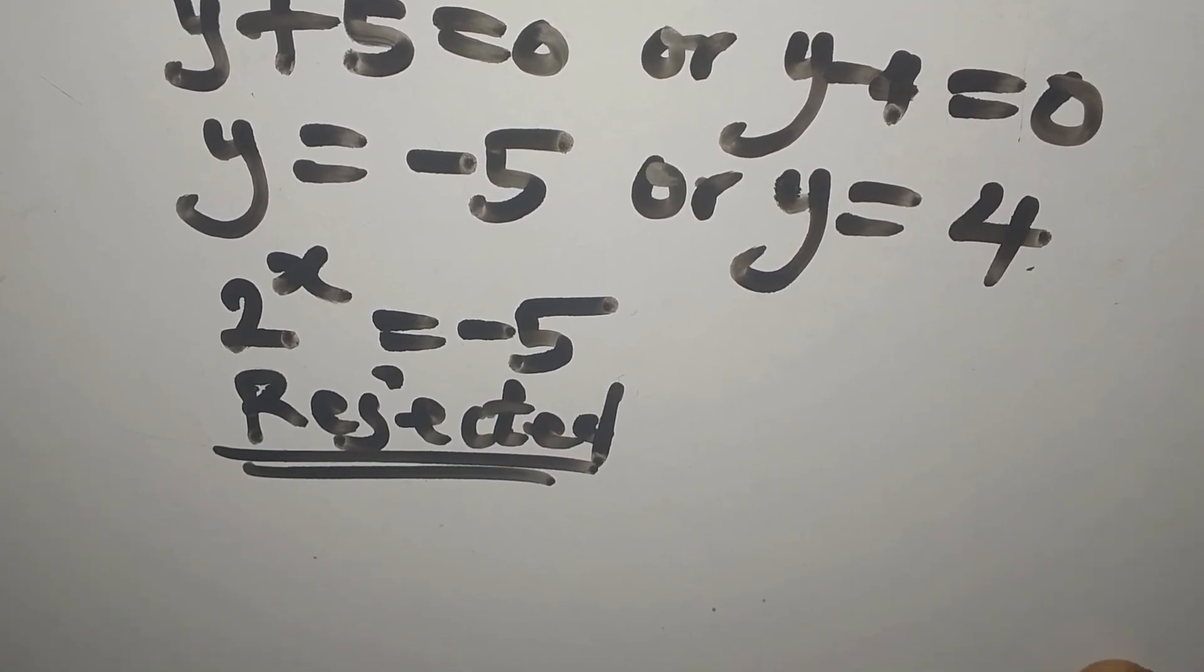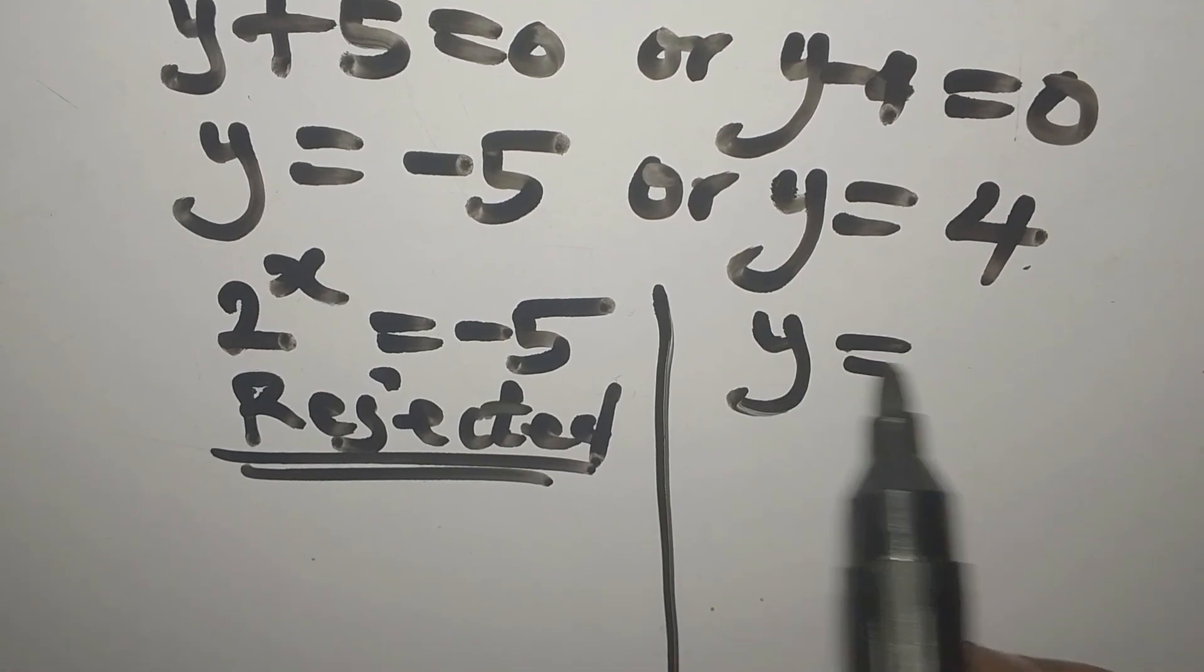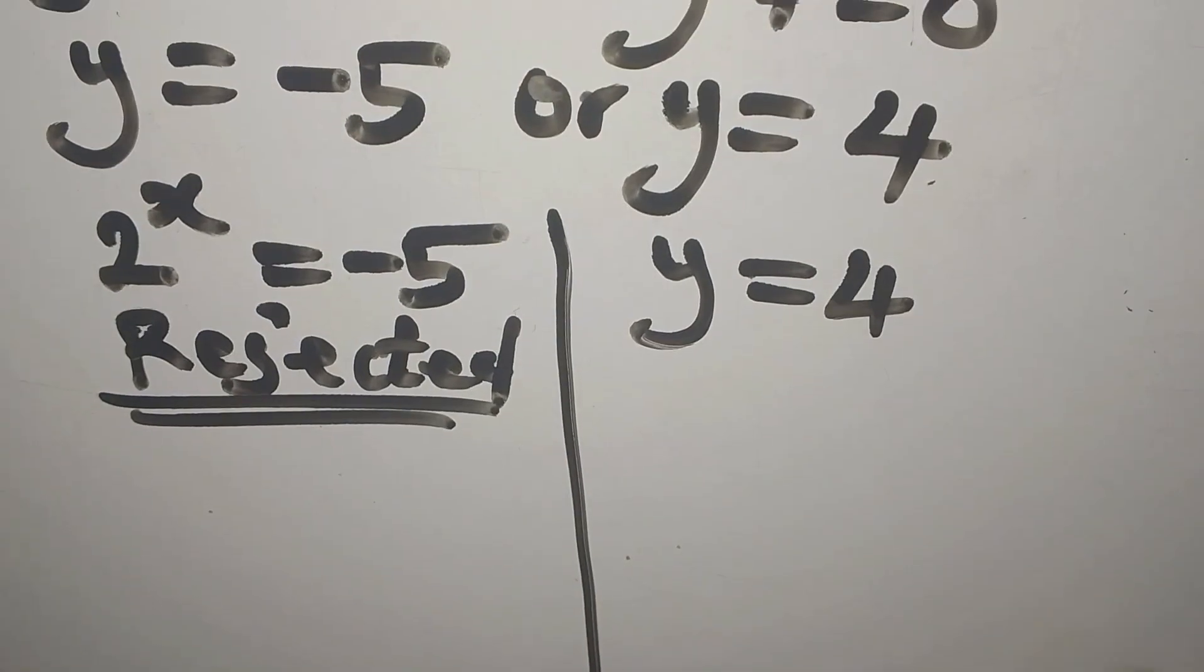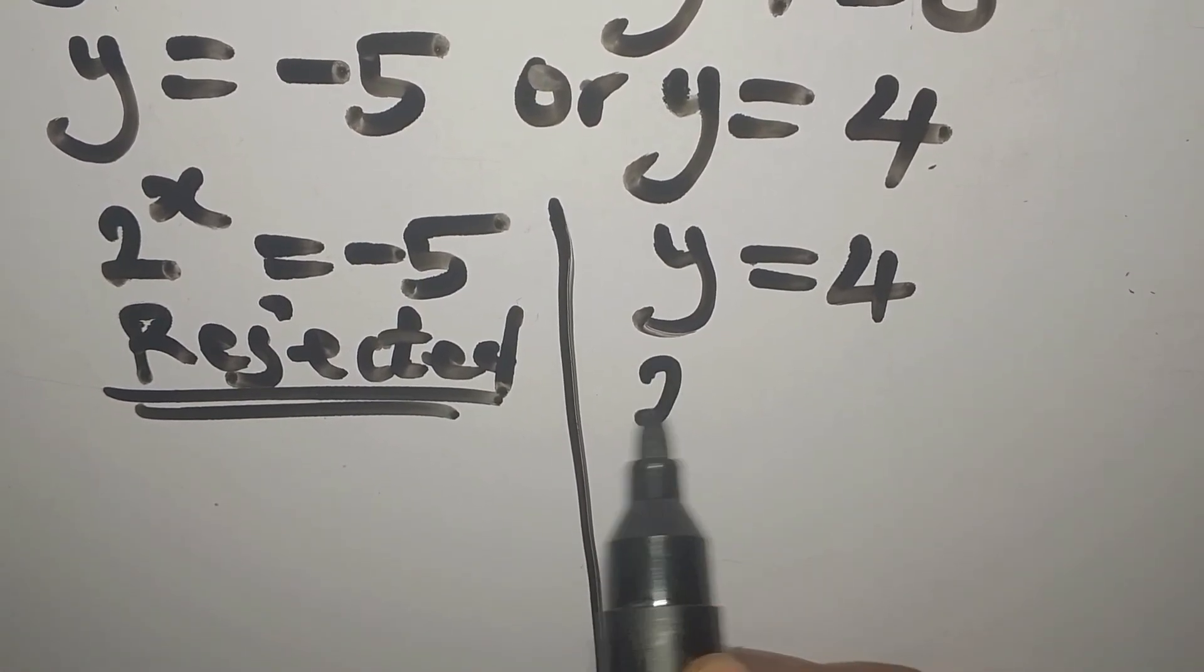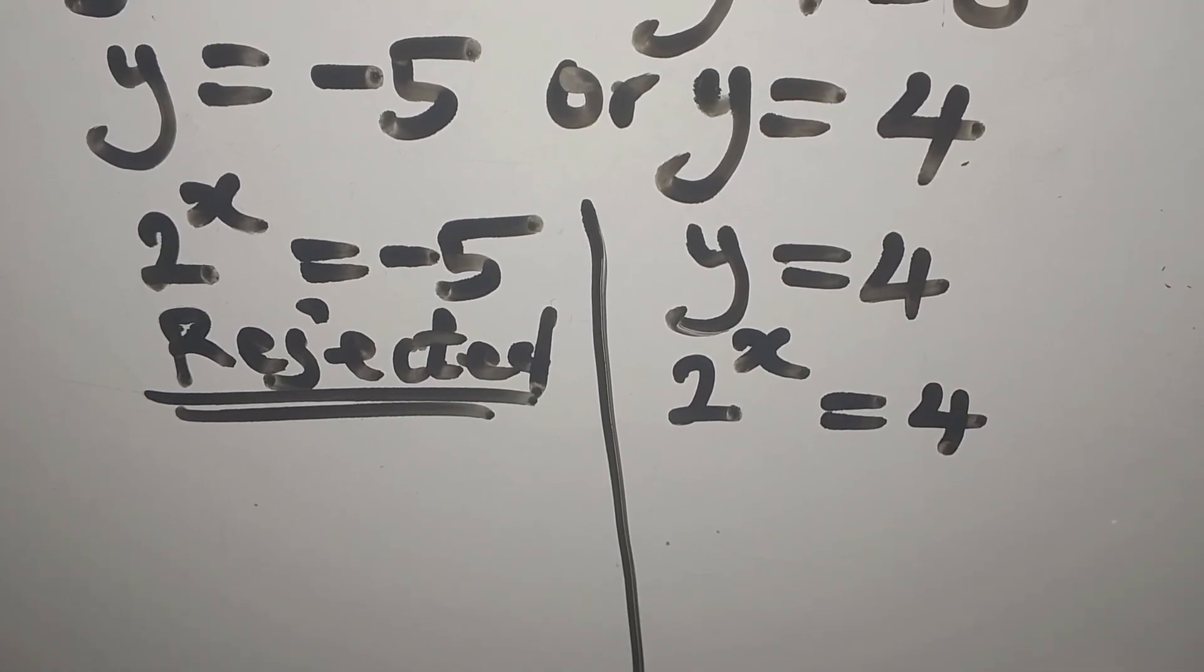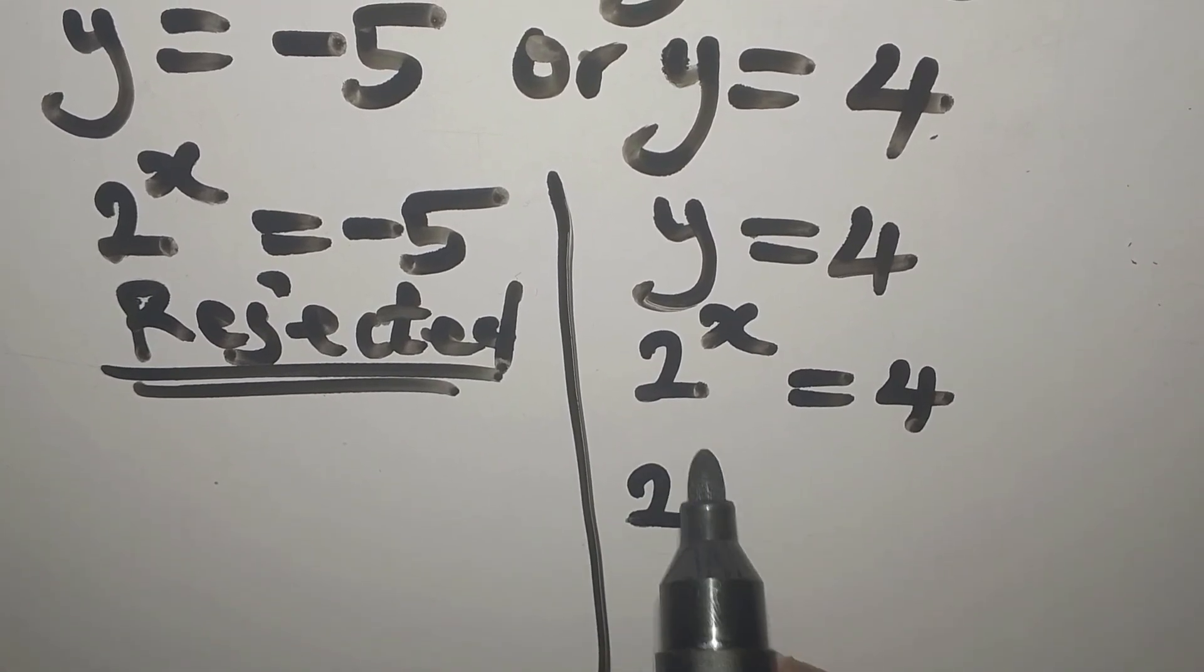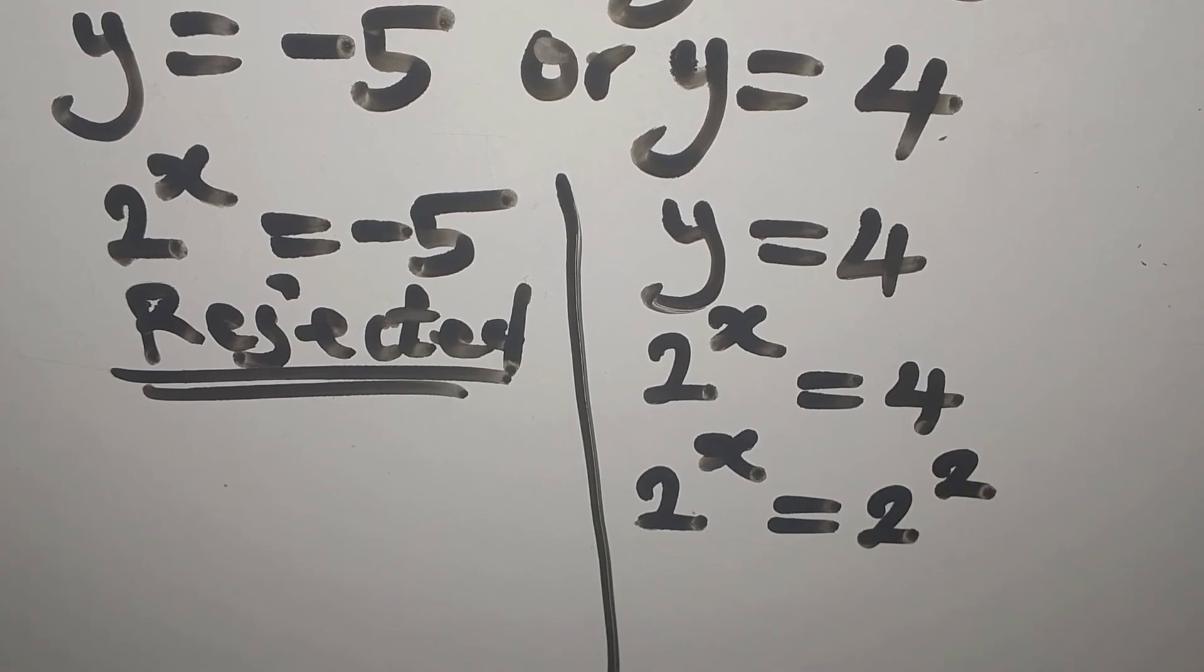So we'll go straight to the other value, which is y equals 4. I remember that we had y to be 2 to the power of x, and that is now 4, right? Mind you, 4 is also the same thing as 2 to the power of 2. So our 2 to the power of x is equal to 2 to the power of 2.